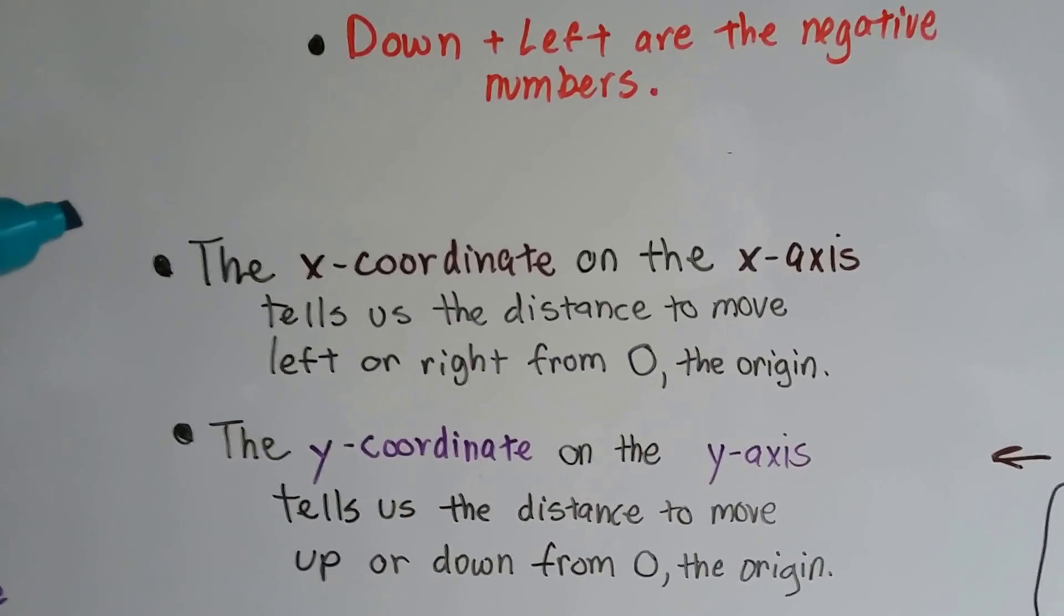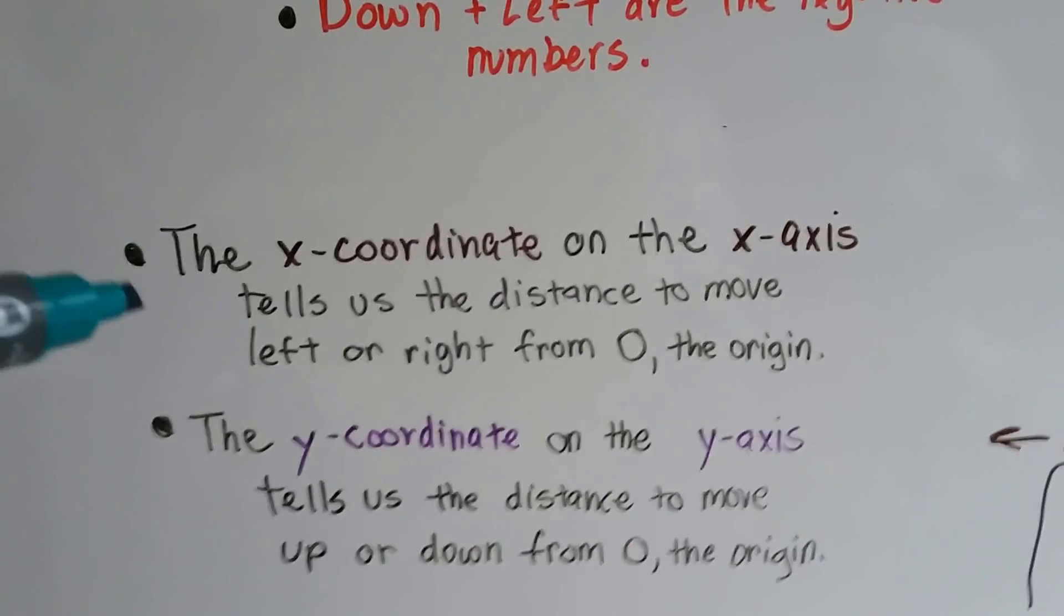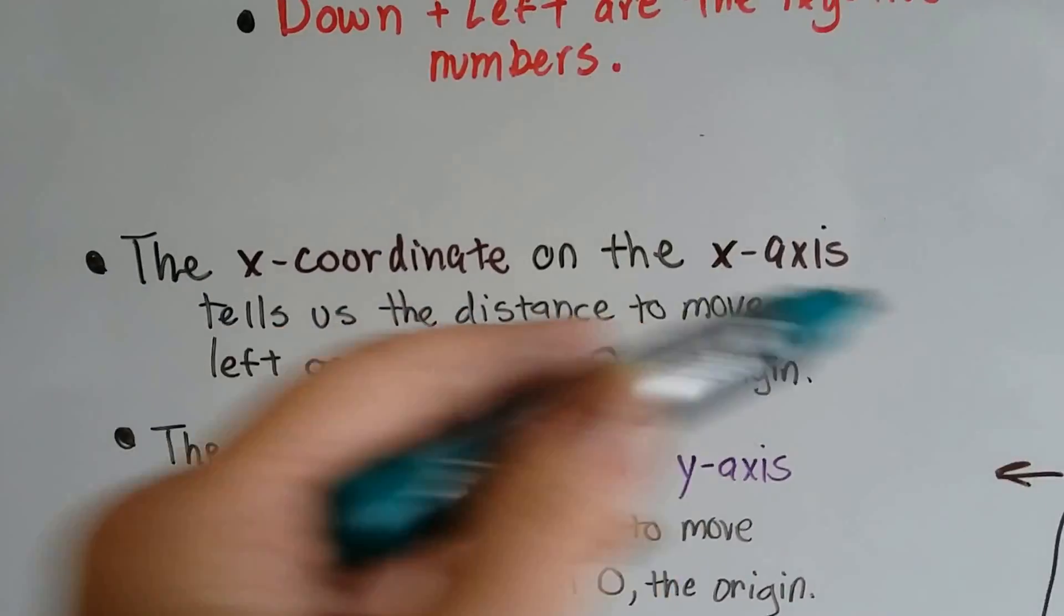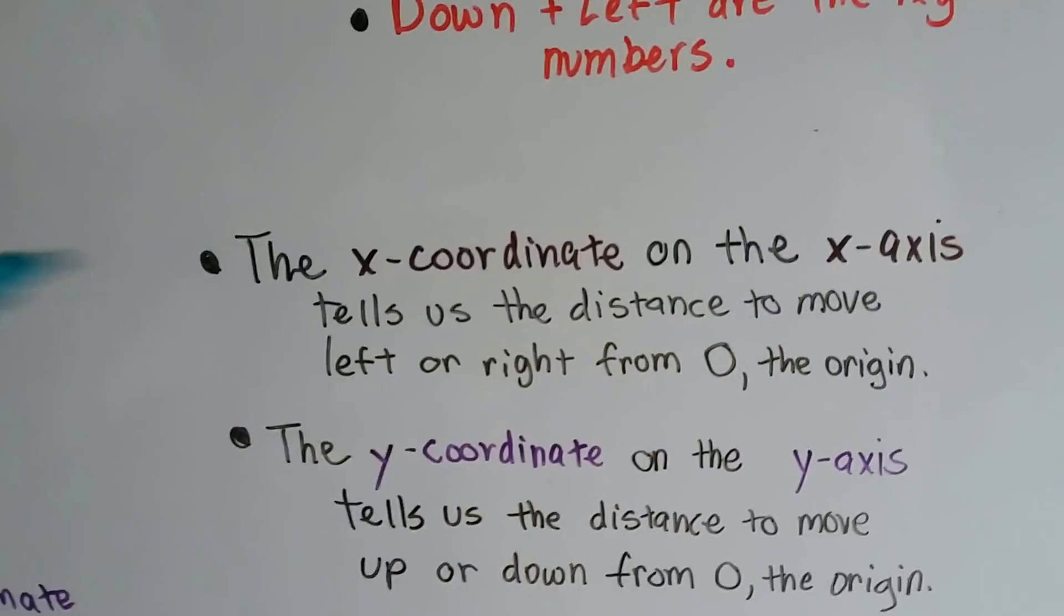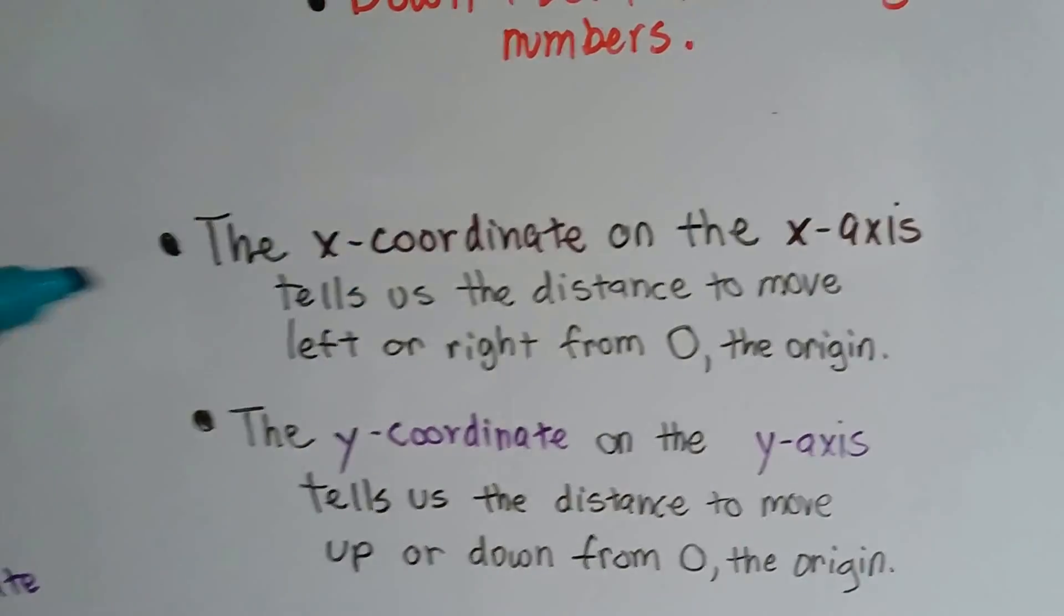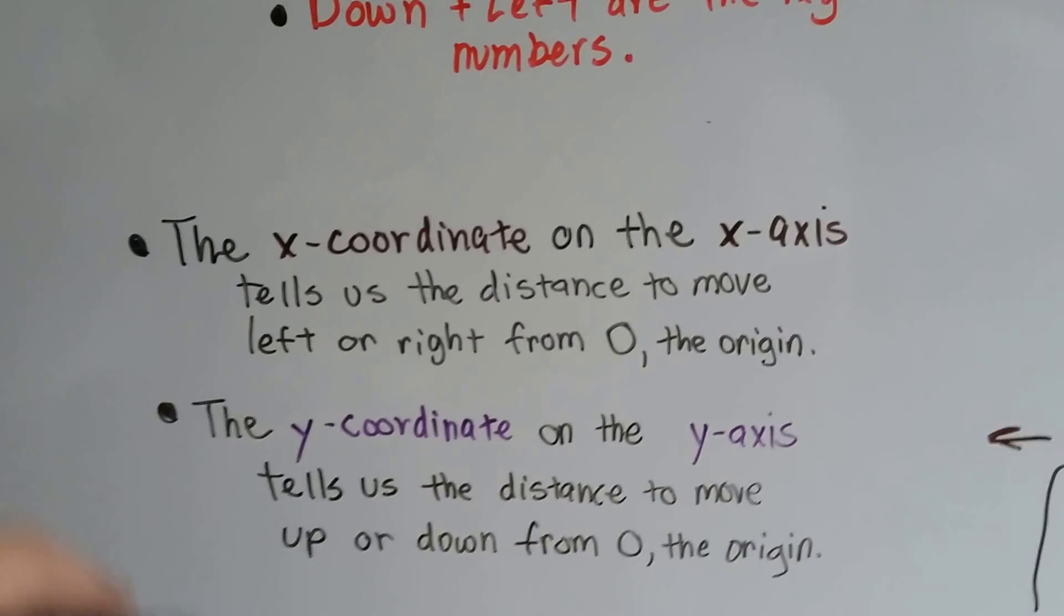The x-coordinate on the x-axis tells us the distance to move left or right from zero, from the origin. And the y-coordinate on the y-axis tells us the distance to move up or down from zero on the origin.